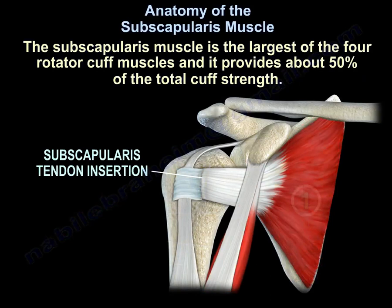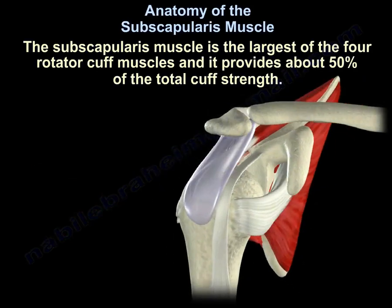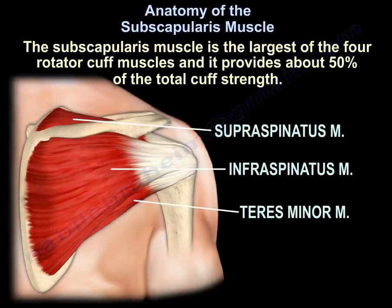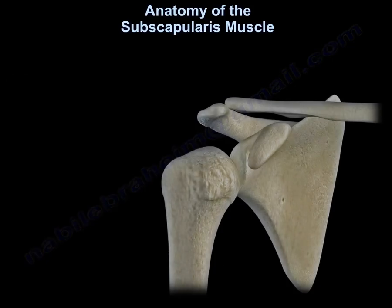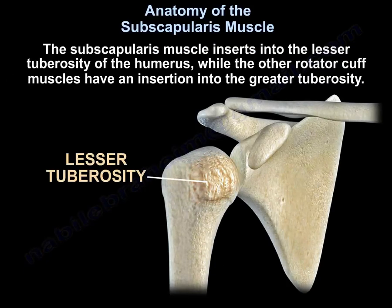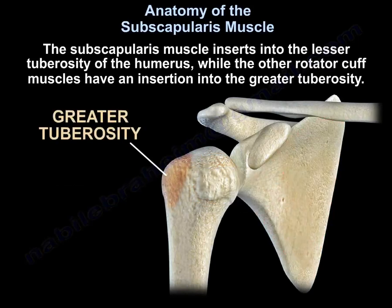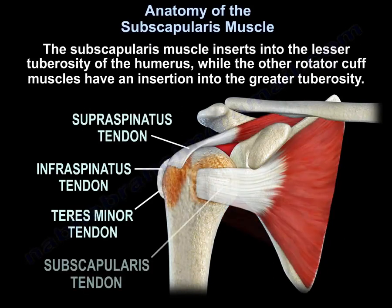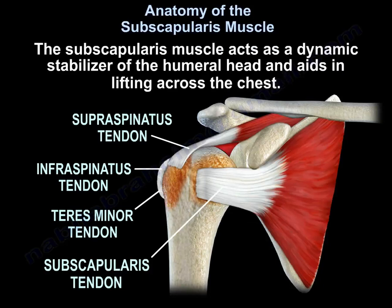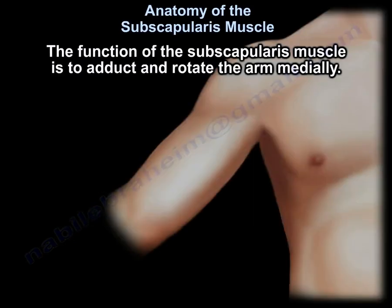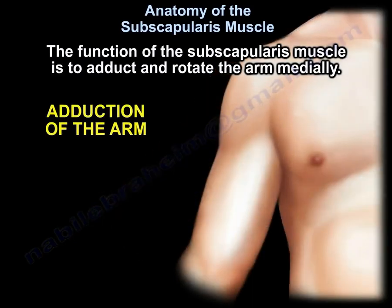The subscapularis muscle is the largest of the four rotator cuff muscles and it provides about 50% of the total cuff strength. It inserts into the lesser tuberosity of the humerus, while the other rotator cuff muscles have an insertion into the greater tuberosity. The subscapularis muscle acts as a dynamic stabilizer of the humeral head and aids in lifting across the chest. Its function is to adduct and rotate the arm medially.